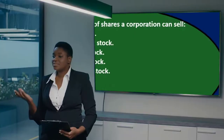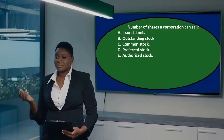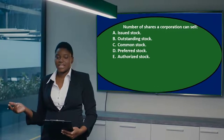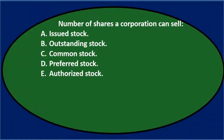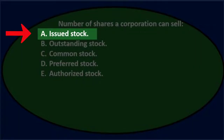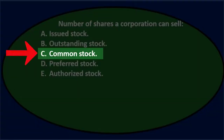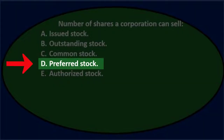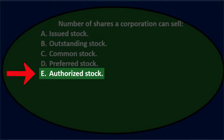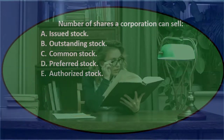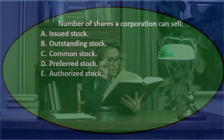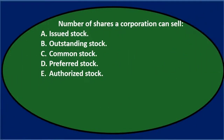In this presentation we will take a look at multiple choice questions related to corporations. First question: number of shares a corporation can sell. Options: A) issued stock, B) outstanding stock, C) common stock, D) preferred stock, and E) authorized stock. We'll go through this and see if we can eliminate some options using the process of elimination.